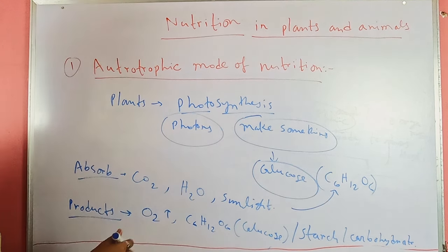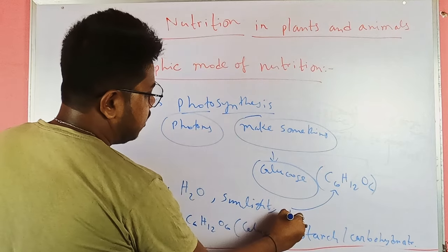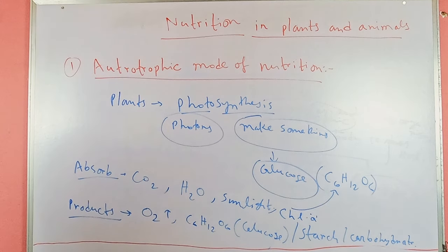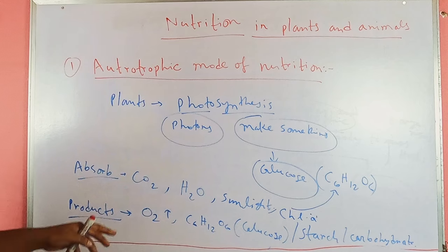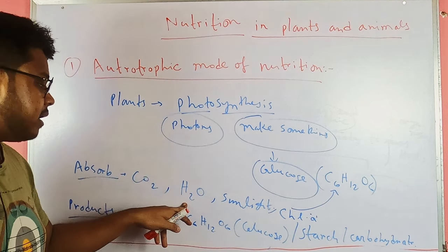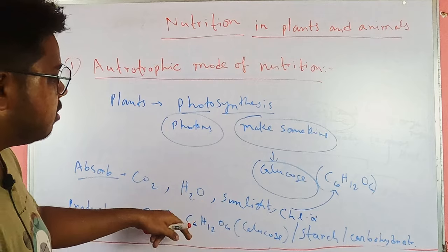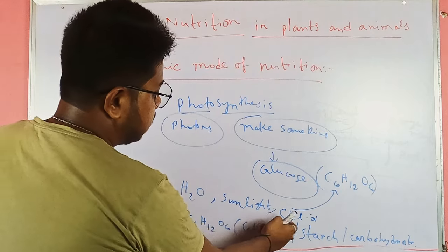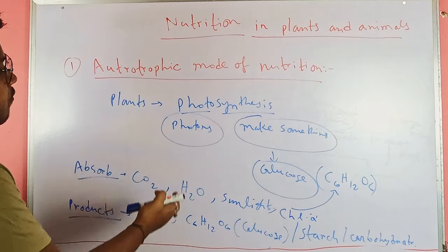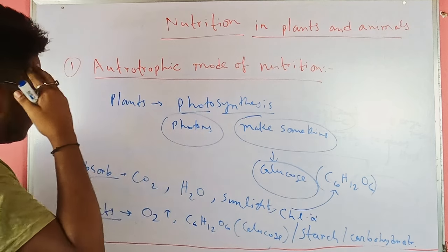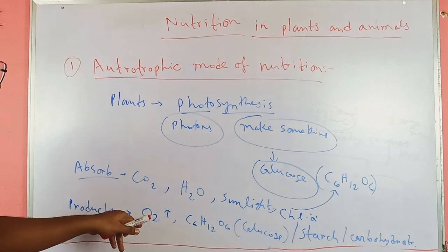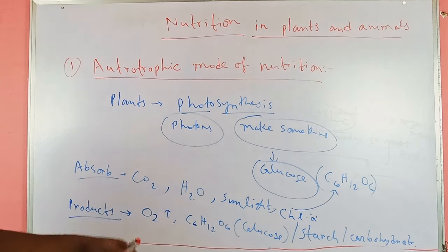Plants require chlorophyll, a green-colored pigment, for photosynthesis. Plants absorb carbon dioxide, water, and minerals from the soil through roots along with sunlight. Using chlorophyll to absorb photons, plants produce glucose or C6H12O6 and emit oxygen gas into the outer environment.